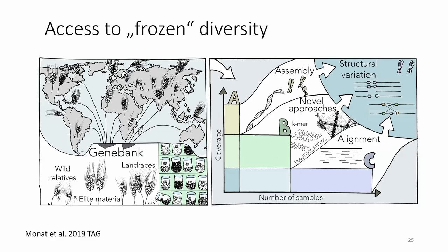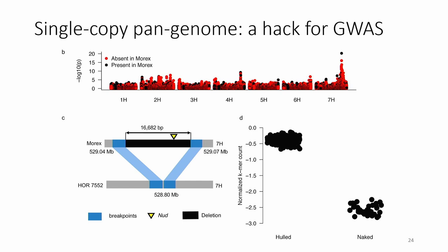We tested our k-mer GWAS approach on the naked grain trait. As expected, we found a locus on chromosome 7H where the Nud gene is located — cloned about 15 years ago — and identified a deletion corresponding to the known Nud deletion. One useful finding is that we have no evidence for another gene controlling the naked grain trait: all naked barleys in our panel lack the Nud gene, and all hulled types have it.